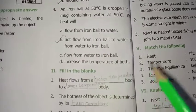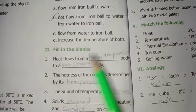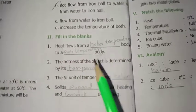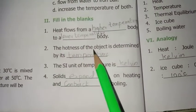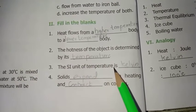Next, fill in the blanks. Heat flows from a higher temperature body to a lower temperature body. Second, the hotness of the object is determined by its temperature. The SI unit of temperature is Kelvin.